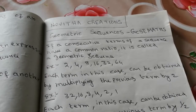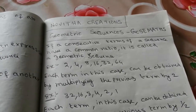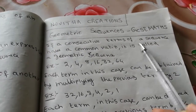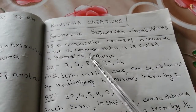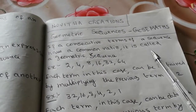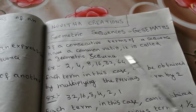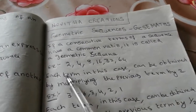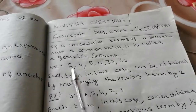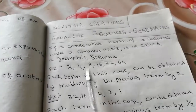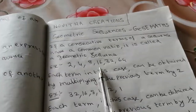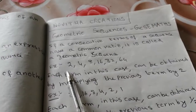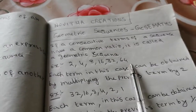What is a geometric sequence? If consecutive terms of a sequence have a common ratio, it is called a geometric sequence. For example: 2, 4, 8, 16, 32, 64. This is a sequence.